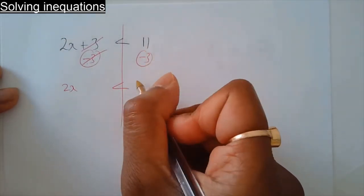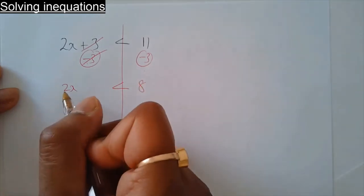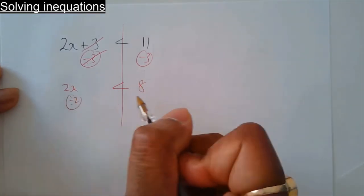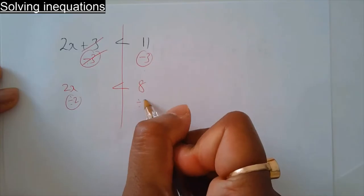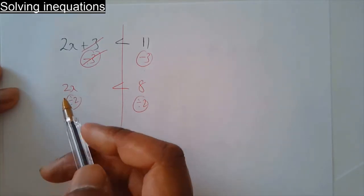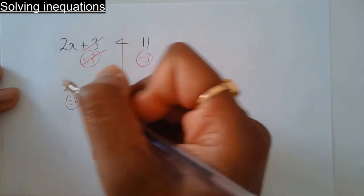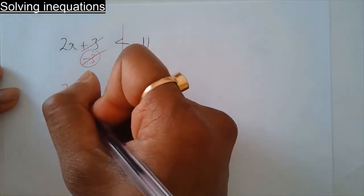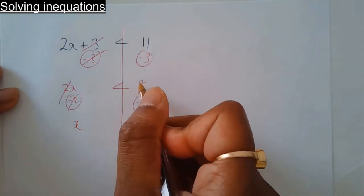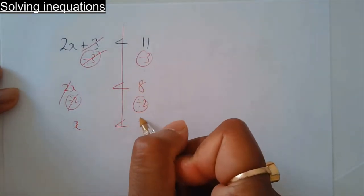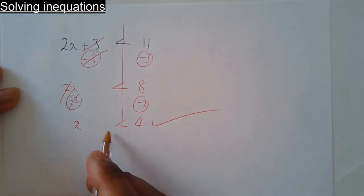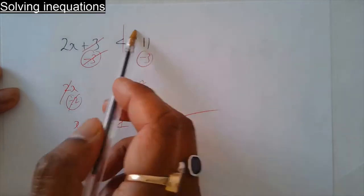11 take away 3, then divide by 2 — do the same on the other side. 2 divided by 2 is 1, so you've just got 1x. 8 divided by 2 is 4, so x has to be less than 4 for that to be true.